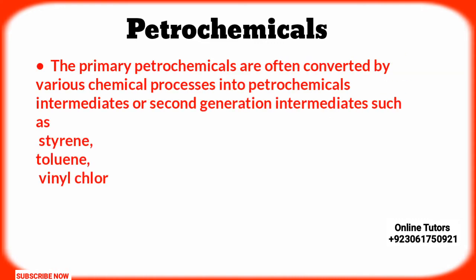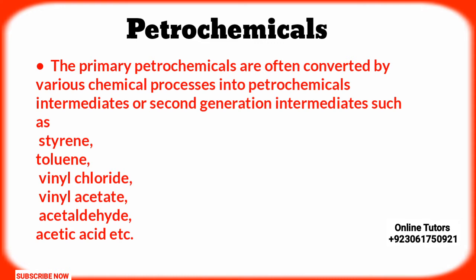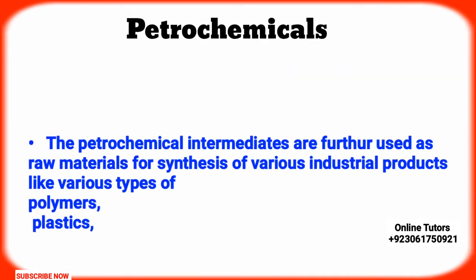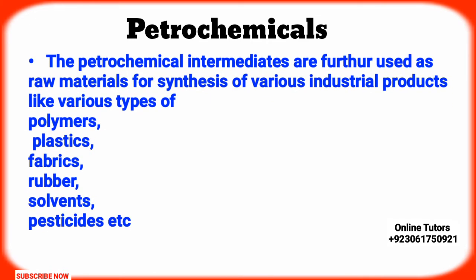The primary petrochemicals are often converted by various chemical processes into petrochemical intermediates or second generation intermediates, such as styrene, toluene, vinyl chloride, vinyl acetate, acetaldehyde, acetic acid, etc. These intermediates are further used as raw materials for synthesis of various industrial products.